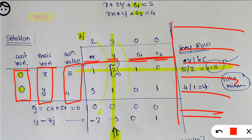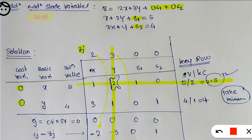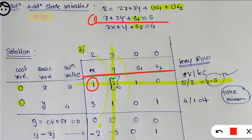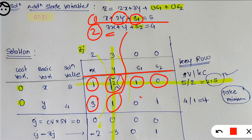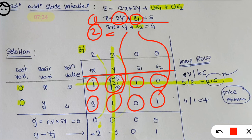Now you have to analyze the coefficients. For the first equation (x plus 2y plus s1 equals 5): coefficient of x is 1, y is 2, s1 is 1, and s2 is 0 (no s2 present). For the second equation (3x plus y plus s2 equals 4): coefficient of x is 3, y is 1, s1 is 0 (no s1 present), and s2 is 1. These coefficients are written into the table rows. The zj row corresponds to the objective equation coefficients: x is 2, y is 3, s1 is 0, s2 is 0.